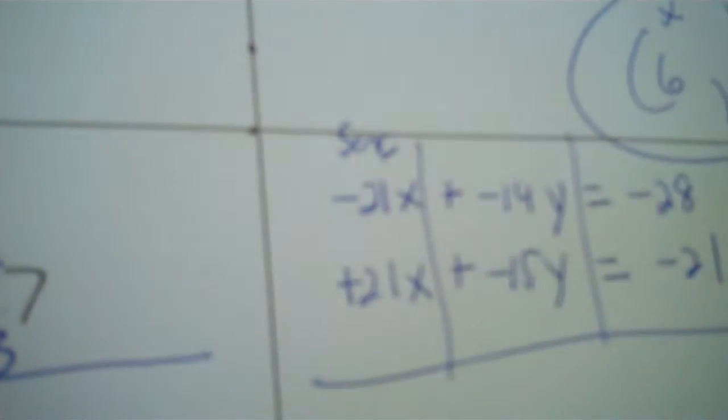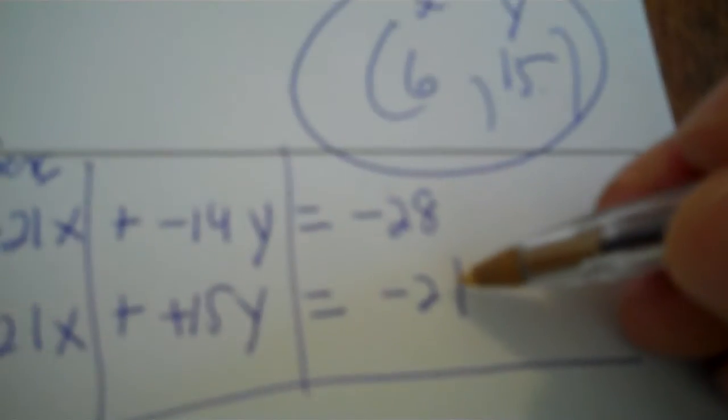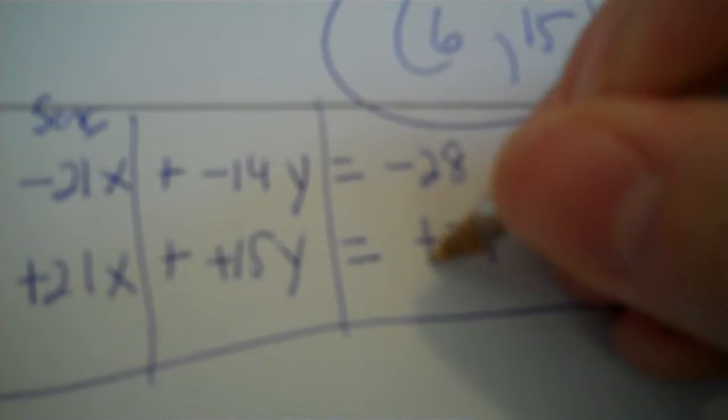Now you have the same here but they're both negative. They cannot both be negative. You need to make this positive. Now these also have to go into their opposite. What's the opposite of negative 15? Positive 15. What's the opposite of negative 21? Positive 21. Now you're adding.